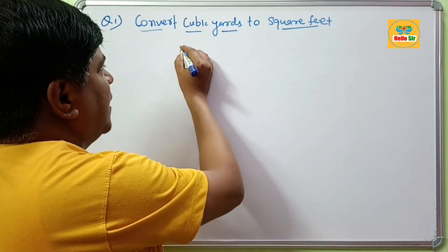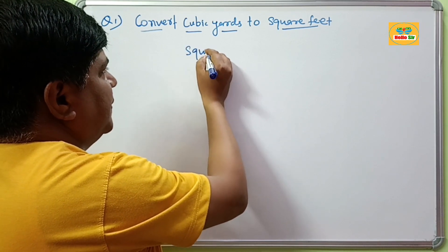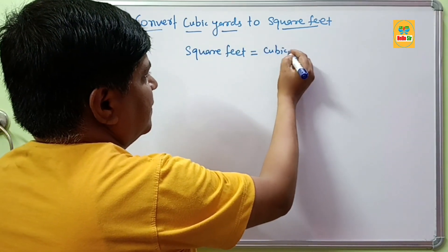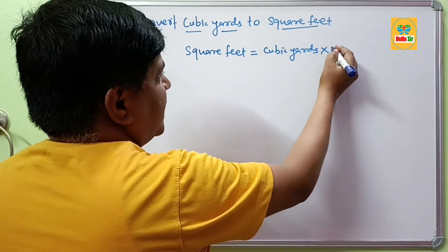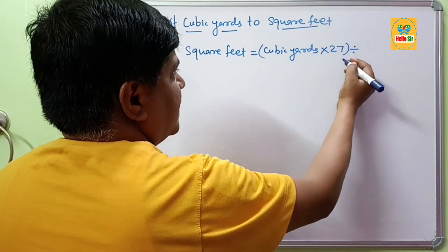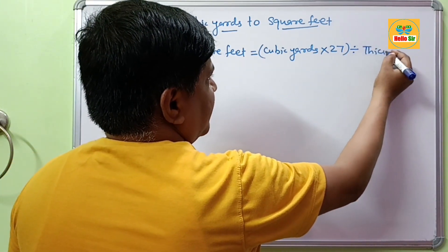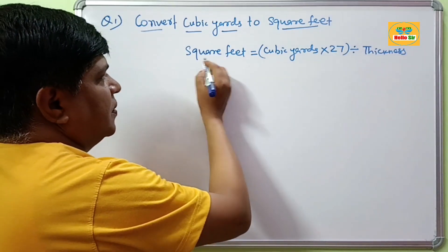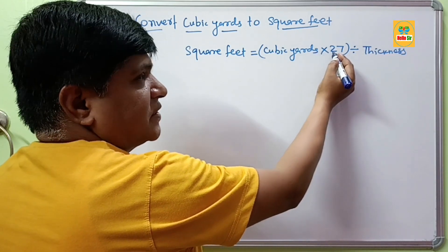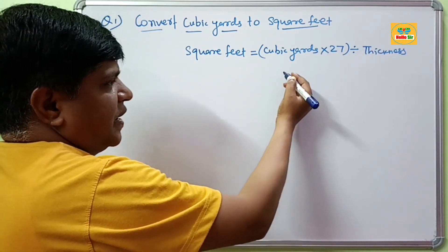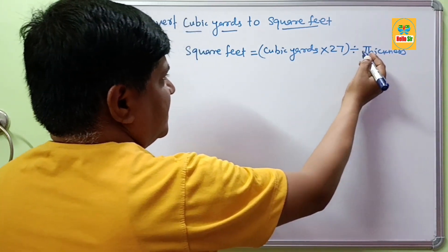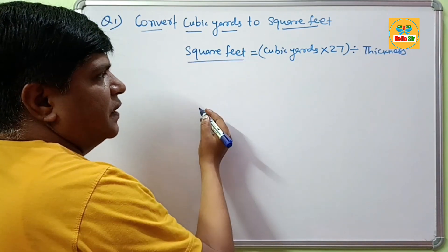The formula used for this conversion is: square feet equals cubic yards multiplied by 27, divided by the thickness of your project in feet. First you multiply the given cubic yards by 27 to get cubic feet, and then the total cubic feet volume is divided by your project thickness, which gives you the number of square feet.